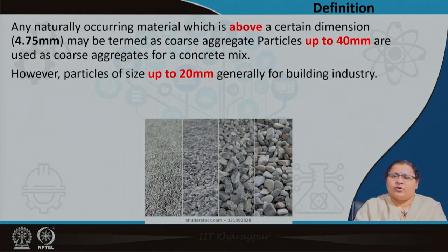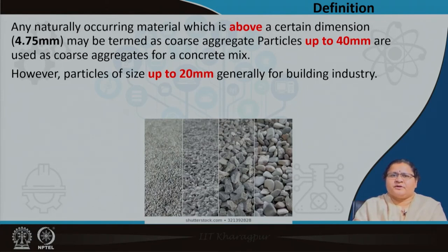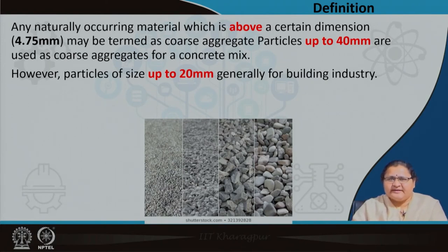For particle sizes, we usually restrict ourselves to up to 20 millimeter, though particle sizes up to 40 millimeter are used as coarse aggregate in large scale mixes. Generally for the regular building industry we go up to sizes of 25 millimeter and below, down to 4.75 millimeter. In the picture here you can see different sizes of coarse aggregate, differentiated by the line, and it is visibly much clearer.